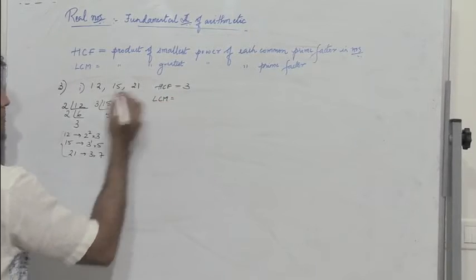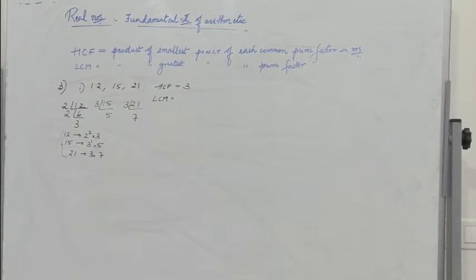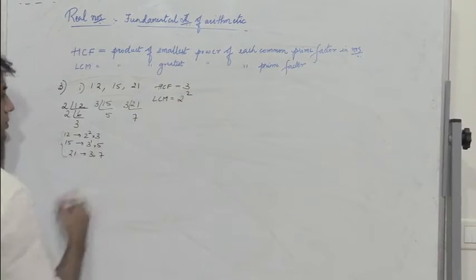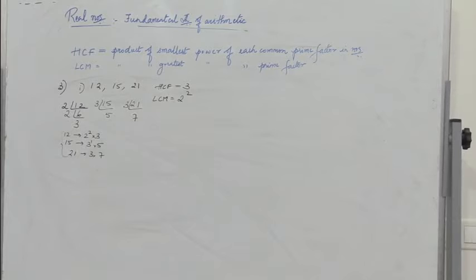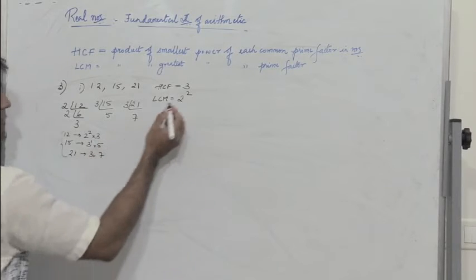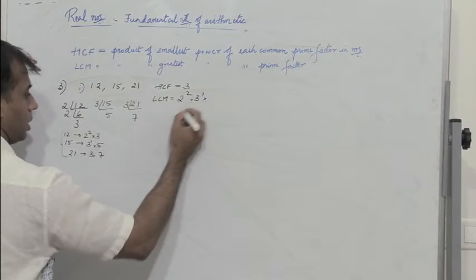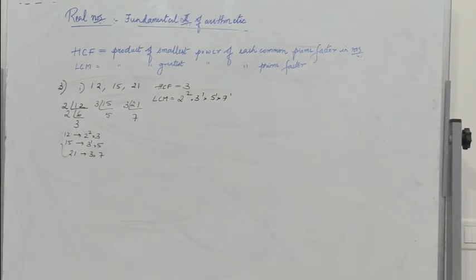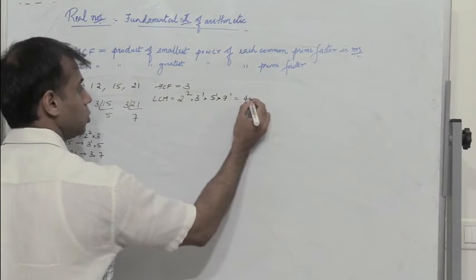For LCM, we find the greatest power of each prime factor. Greatest power of 2 is 2², of 3 is 3¹, and we also have 5¹ and 7¹. So LCM = 2² × 3 × 5 × 7 = 420.